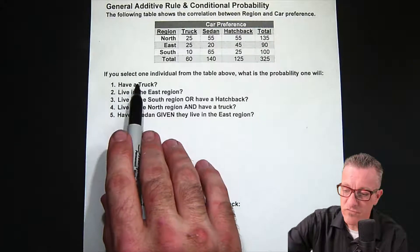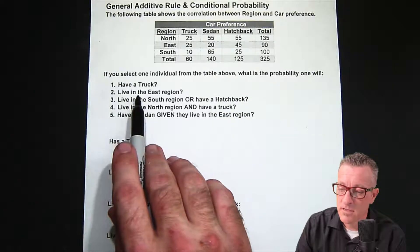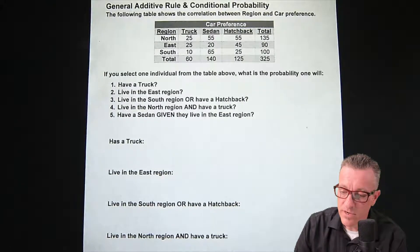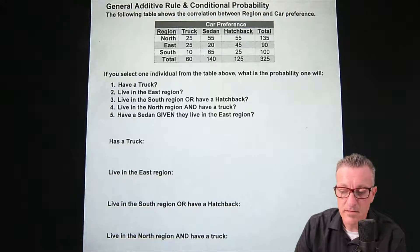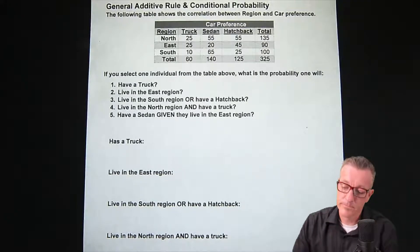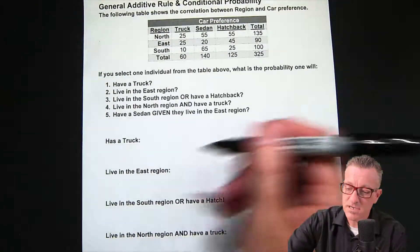If you select one individual from the table above, what is the probability one will: have a truck, live in the East region, live in the South region or have a hatchback, live in the North region and have a truck, have a sedan given they live in the East region.